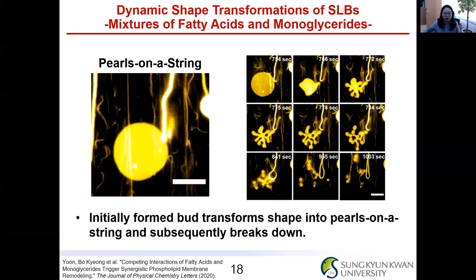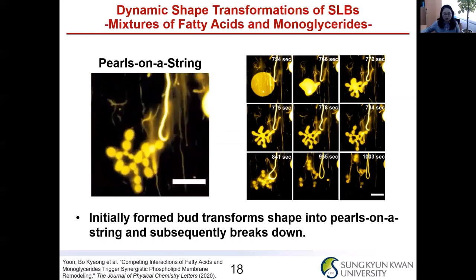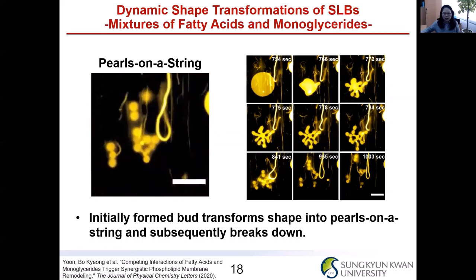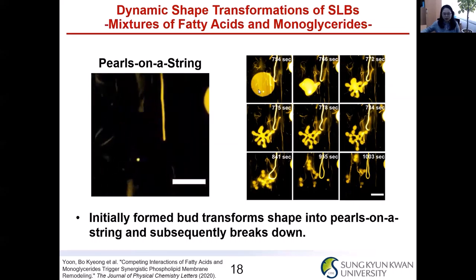From fluorescence microscopy, we observed very interesting dynamic shape transformations. The first example is the pulse-on-a-string transformation. It initially forms a big bud, and then over seconds, the bud transforms into a pulse-on-a-string shape, and subsequently breaks down the structure and forms small buds.